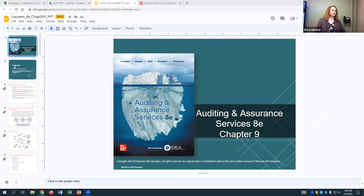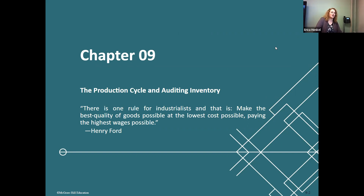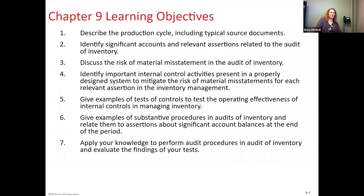So I'm going to chat about Chapter 9. This chapter is going to be on the production cycle and auditing inventory — looking at transformation of products into inventory, so raw materials into finished inventory, the selling of that inventory and charging off to cost of goods sold are the key aspects here. We already talked about the revenue side; now we're mostly talking about the inventory and cost of goods sold portion. Learning objectives include source documents, relevant assertions, potential for material misstatement, tests of controls related to inventory, and audit procedures that might apply.